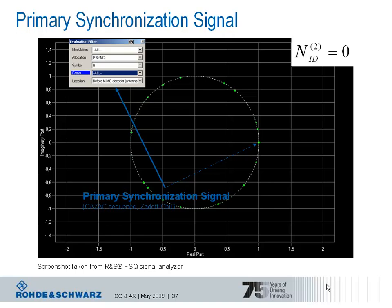Matched filtering works by correlating the received signal with the possible sequences for the primary synchronization signal. This procedure is not executed on the received analog RF signal — it happens in the digital domain. With successful matched filtering, the device has identified the physical layer identity used for this cell as well as 5 ms timing. Afterwards, it can execute the next step: looking for the secondary synchronization signal and the physical layer cell identity group to compute the cell's identity.